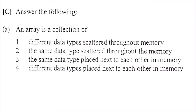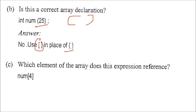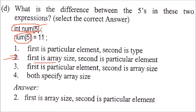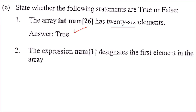An array is a collection of similar data types arranged in contiguous or sequential manner in memory — the answer is option 3: the same data type placed next to each other in memory. Array declaration uses square brackets, not other symbols. The expression num[4] gives you the fifth element because subscripts start from 0. The first 5 in int num[5] is the array size; the second in num[5] is a particular element. The array int num[26] has 26 elements — true. num[1] designates the second element, not the first — false. num[27] designates the 28th element — true.